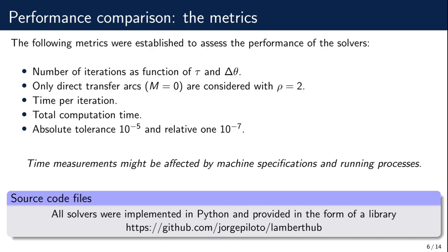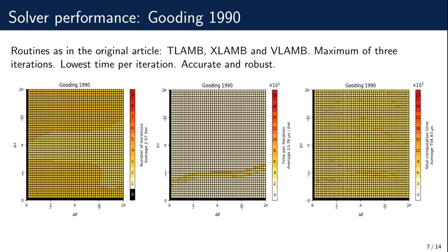Starting with Gooding's algorithm analysis: this algorithm was implemented using the same code provided by Gooding in his article. As claimed by him, the solver does not require more than three iterations. However, it seems to require more time per iteration when the non-dimensional time of flight lies near pi halves. Nevertheless, the overall total time shows it is a robust and accurate solver.